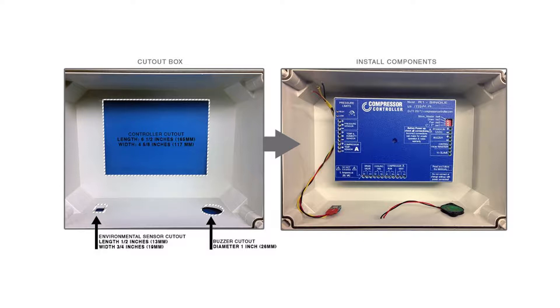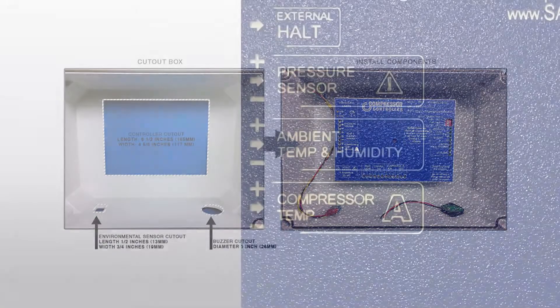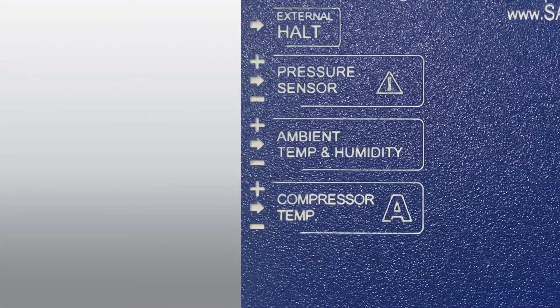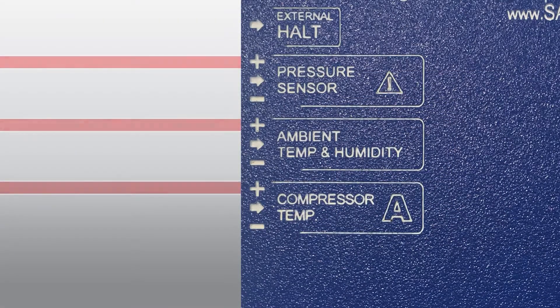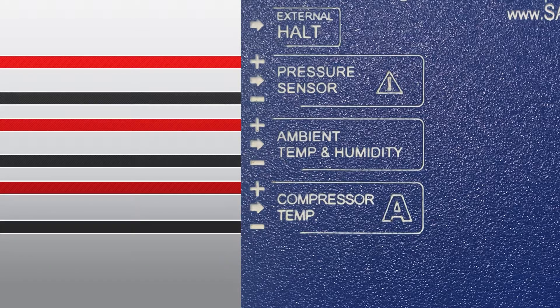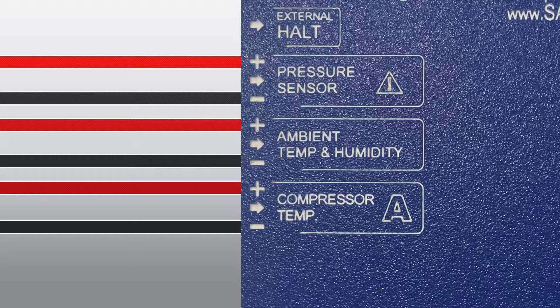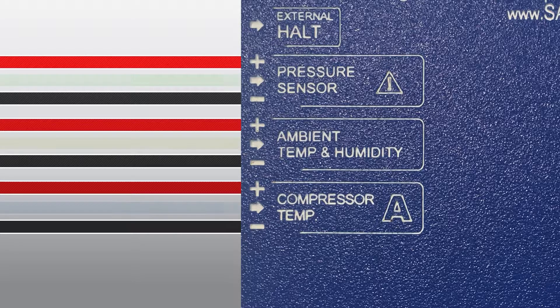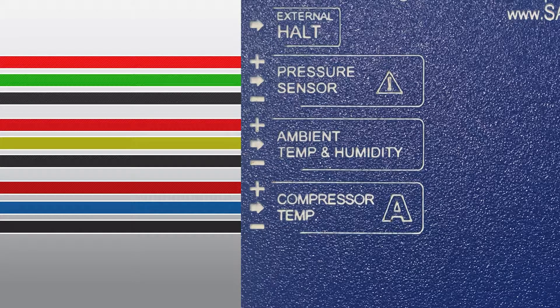Now we can connect the enclosure components to the compressor controller. Connecting these generally follows a rule of thumb that the red wires are connected to the connector with a plus mark, the black wires are connected to the connector with a negative mark, and the other colored wires connected to the signal connector, denoted with an arrow.